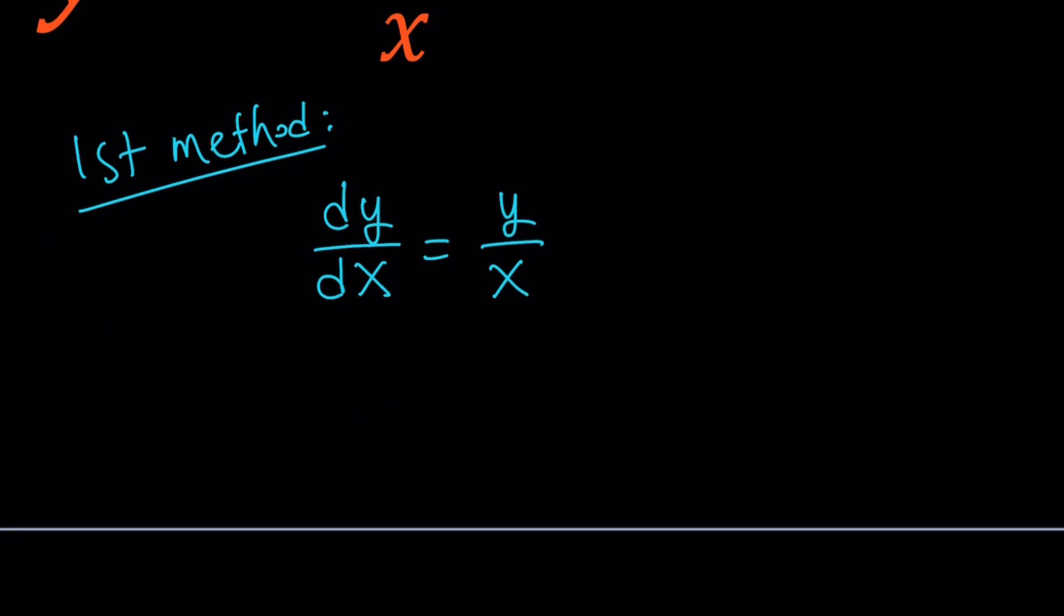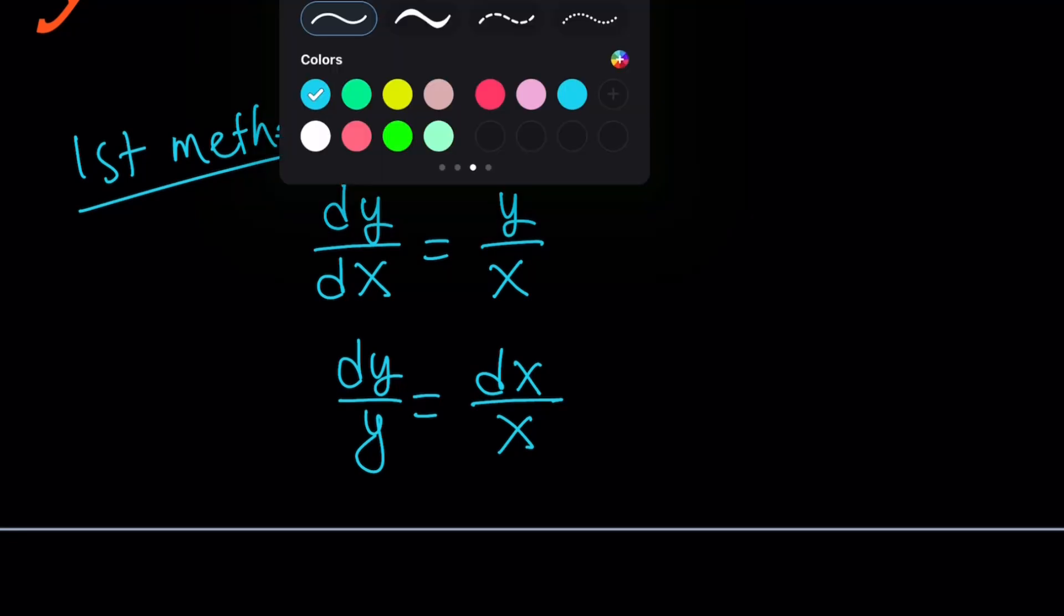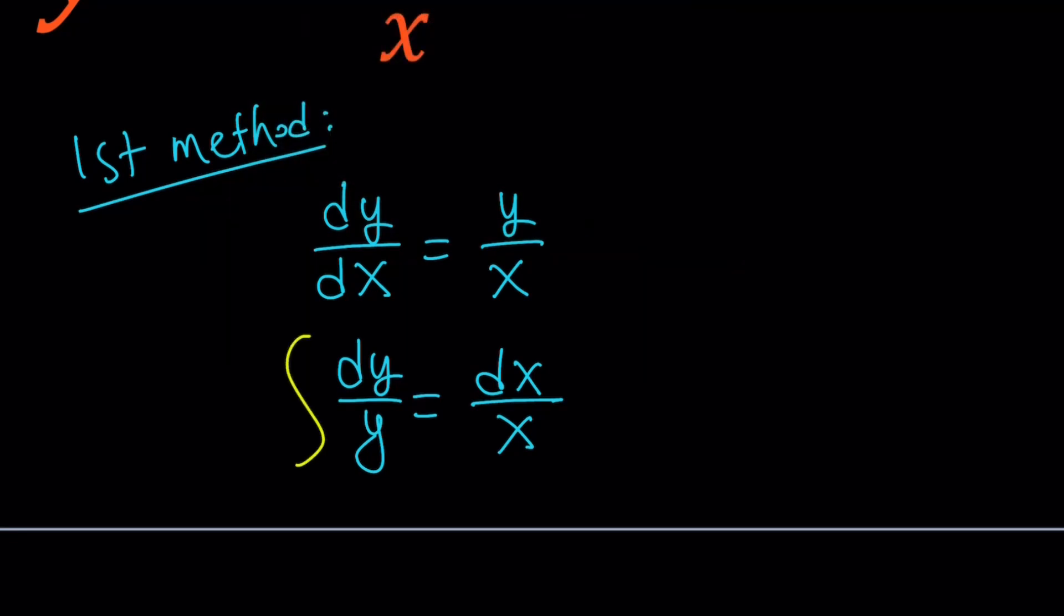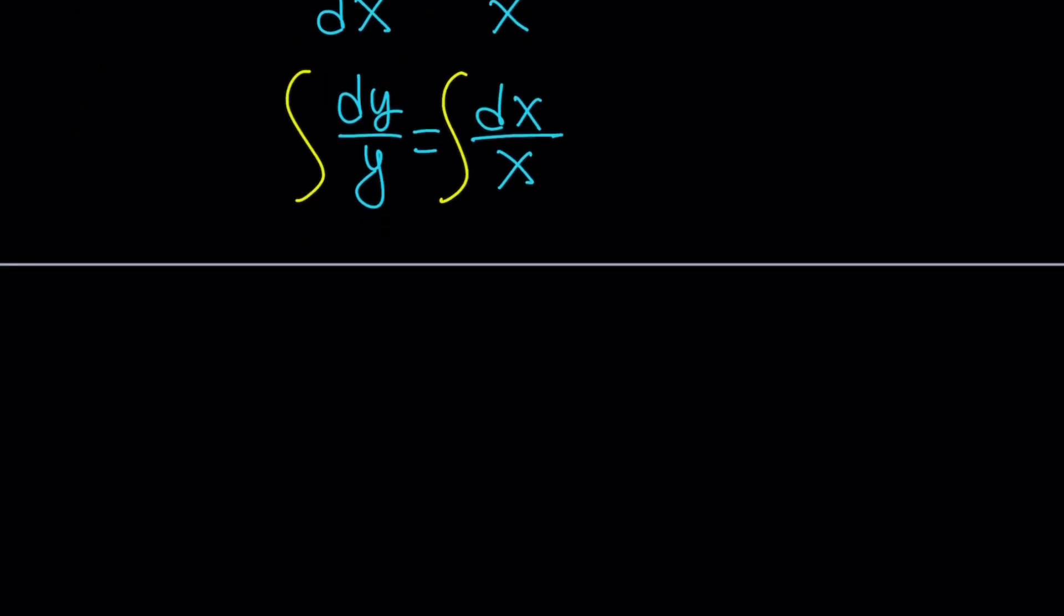So, let's go ahead and separate the variables. Put the y on the left, divide by that, and put the dx on the right, multiply by that, and you'll get this. Now, this is really cool because the variables are separated so I can integrate. When you integrate each side, you're going to get something with the natural log function.